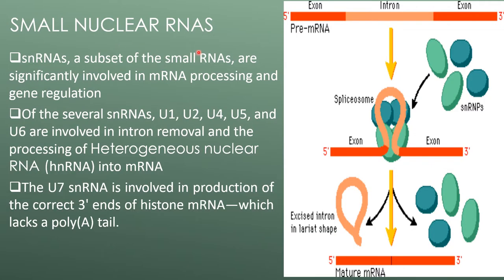Small nuclear RNAs, or snRNAs, are a subset of small RNAs significantly involved in mRNA processing and gene regulation. Several snRNAs — U1, U2, U4, U5, and U6 — are involved in intron removal and processing of heterogeneous nuclear RNA into mature mRNA.